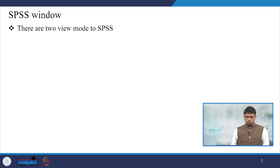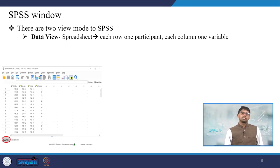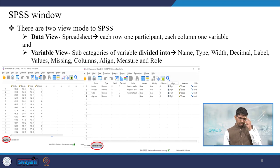There are two view modes to SPSS. Data View looks like a spreadsheet, each row one participant, each column one variable. Variable View gives subcategories about the variable divided into Name, Type, Width, Decimal, Label, Values, Missing, Columns, Align, Measure and Role.